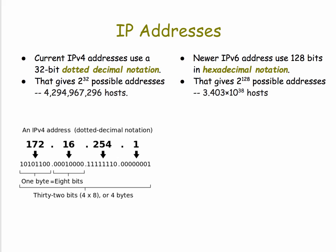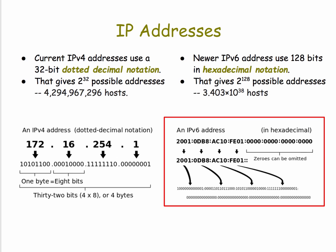The problem is we're running out of IP addresses, especially with all the mobile devices coming online and now the Internet of Things coming online. We need a bigger IP address.